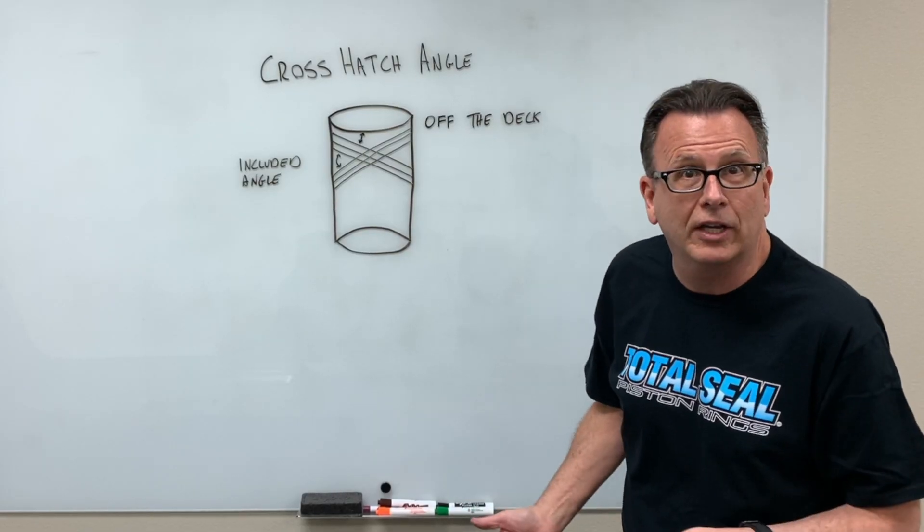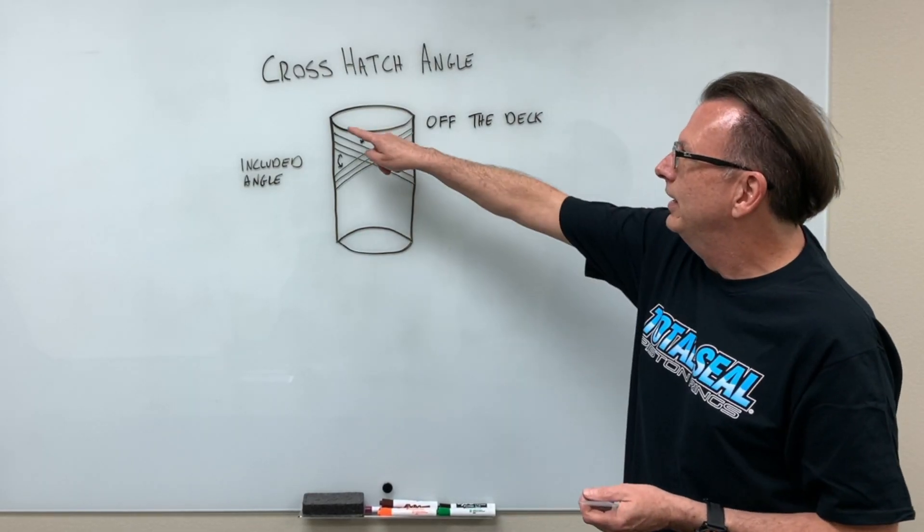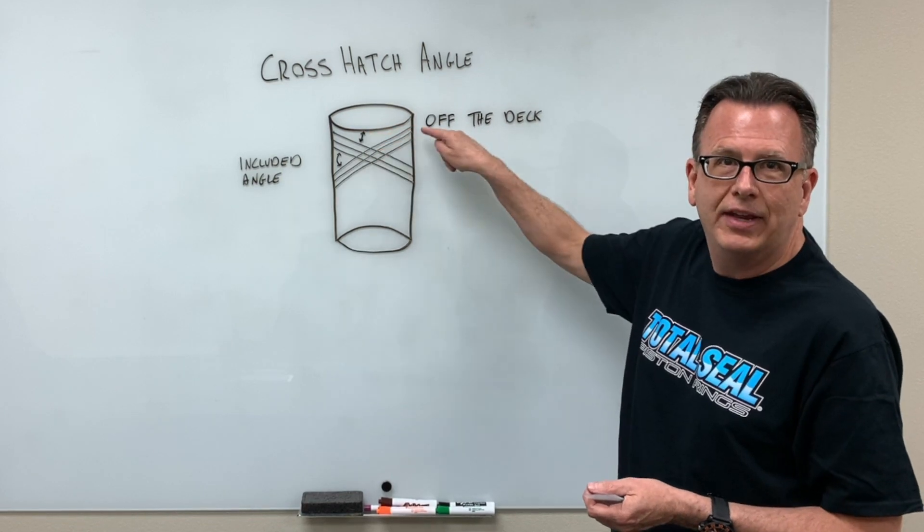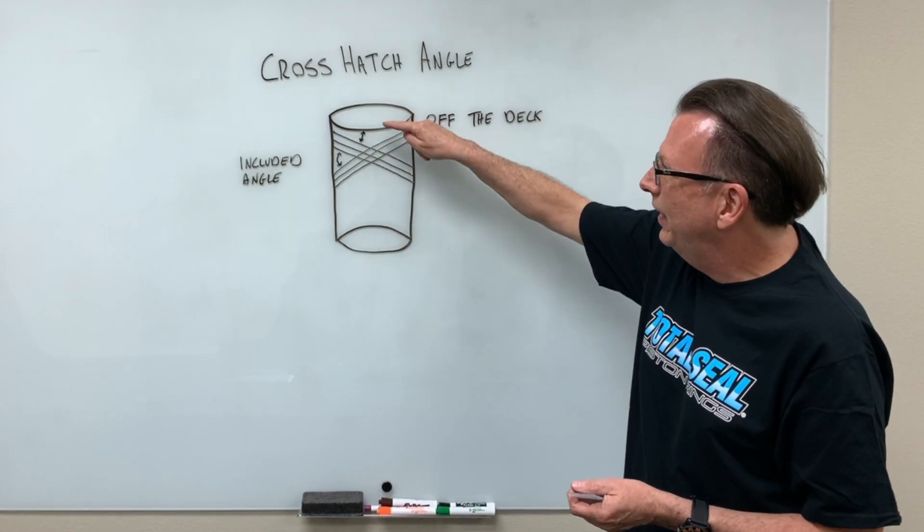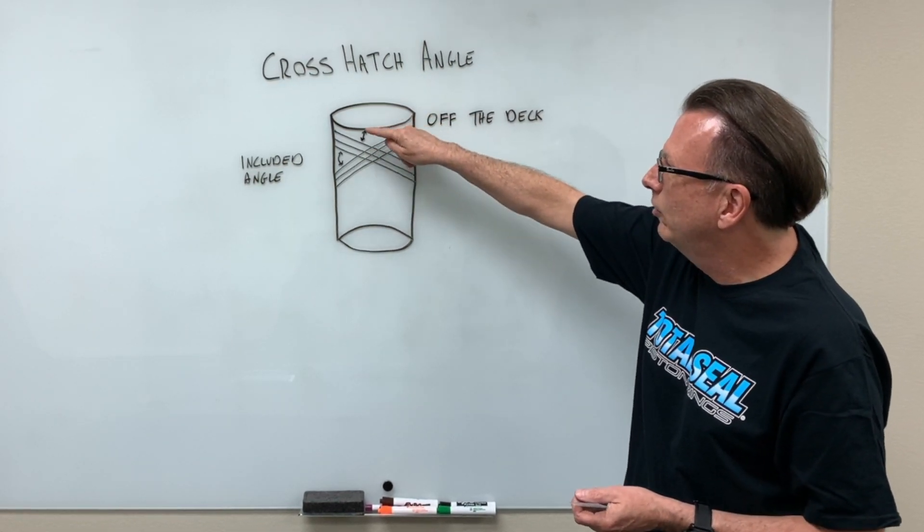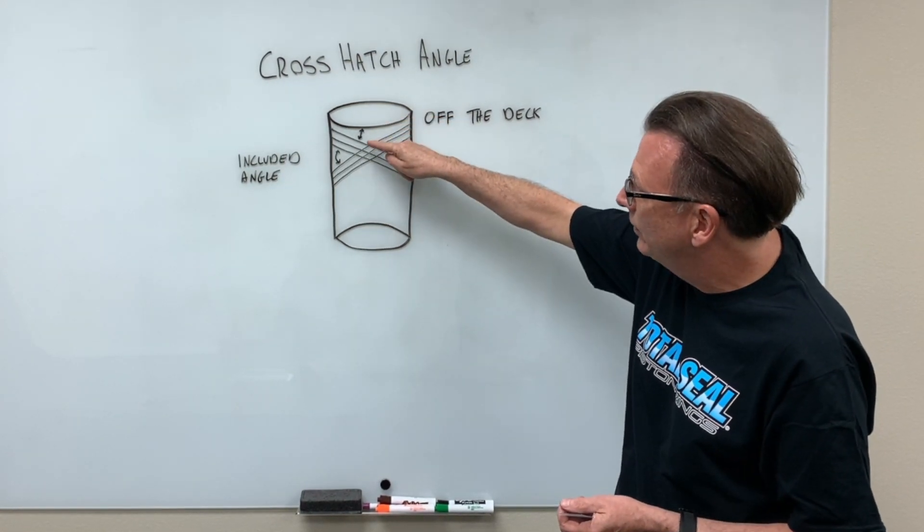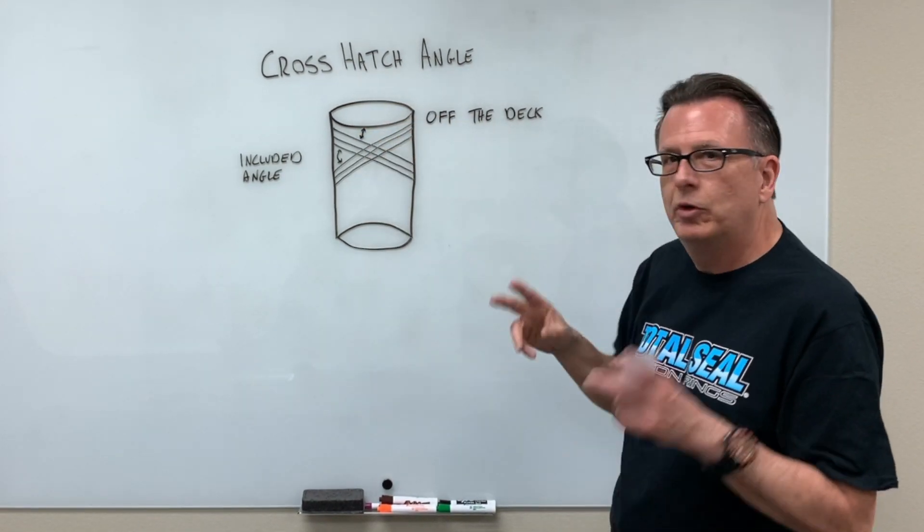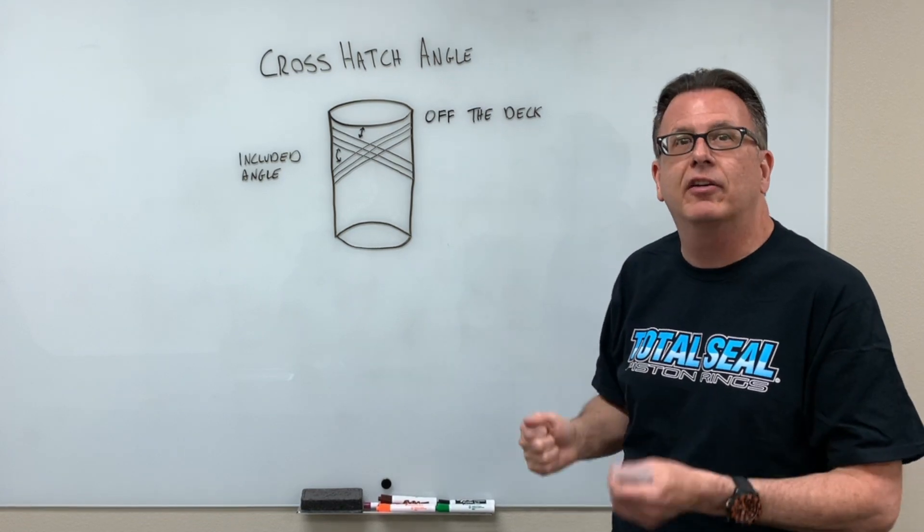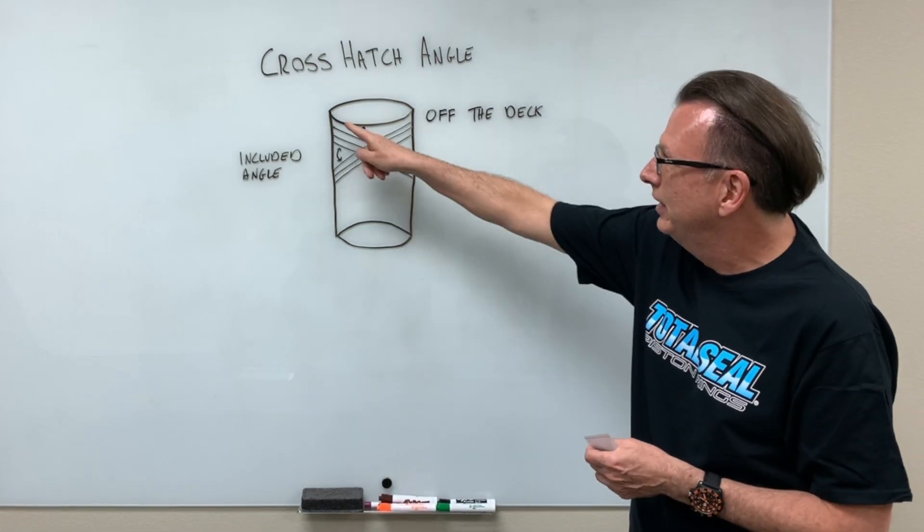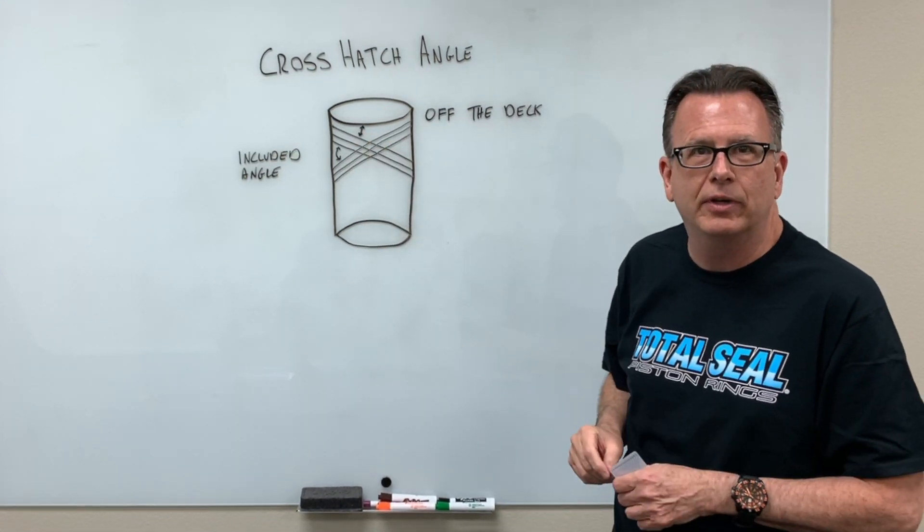That's kind of difficult to measure in a cylinder unless you're using a tool like a USB microscope. It's very easy though to measure it off the deck, off the top surface. And then we're measuring a simple angle from the flat surface down to the crosshatch, which will be half that number. If we're looking at a 45-degree crosshatch angle, this angle will be 22 and a half degrees.